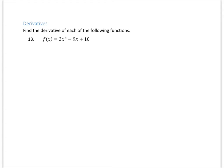Moving on to derivatives — obviously we spent a lot of time on derivatives in Calc 1. The first rule to remember is the power rule: the derivative of x to the nth power is n times x to the n minus 1. So the derivative of x to the 4th is 4 times x to the 4 minus 1, or 4 times x cubed.